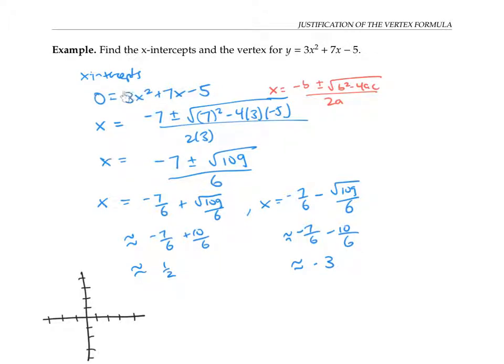Since the leading coefficient 3 is positive, I know my parabola is going to be opening up. And the intercepts are somewhere around here and here. So roughly speaking, it's going to look something like this. Now the vertex is going to be somewhere in between the two x-intercepts. In fact, by symmetry, it'll be exactly halfway in between the two x-intercepts.